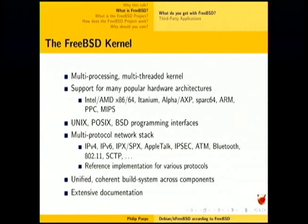The FreeBSD kernel — which you are borrowing — is a multiprocessing, multithreaded kernel, which means it's finely grained. It runs happily on as many CPUs as you care to throw at it. We support many popular architectures. Debian is currently only interested in i386 and AMD64. FreeBSD is particularly gaining traction on MIPS, and there's also quite a lot of work going on ARM. Like Linux, we have Unix and POSIX interfaces, plus BSD interfaces. Our network stack is the reference for at least IPv4 and probably IPv6 as well.